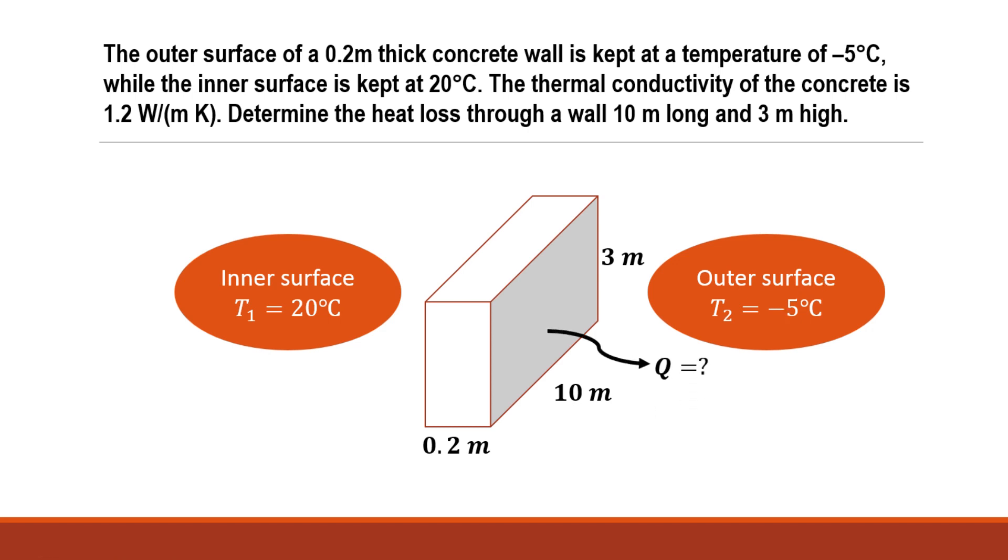We have to find the heat transfer through this surface. The surface area is 10 × 3 = 30 m². Through this surface area, we need to find the heat transfer from higher temperature to lower temperature, or from the inner surface toward the outer surface.